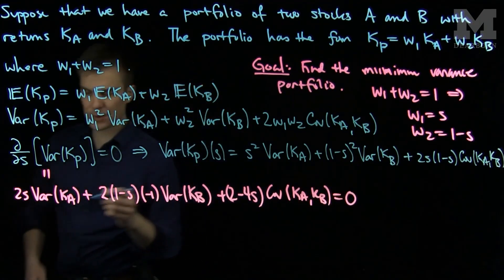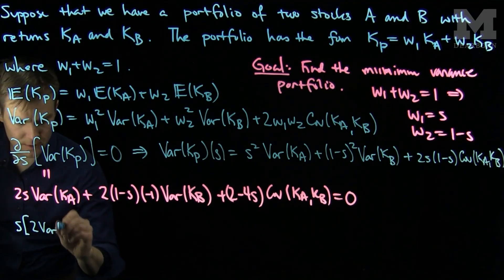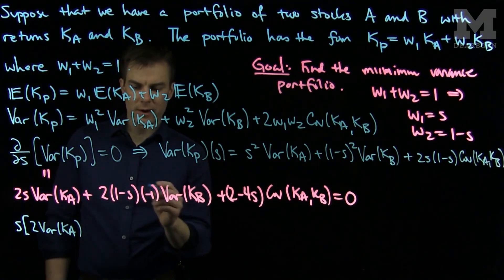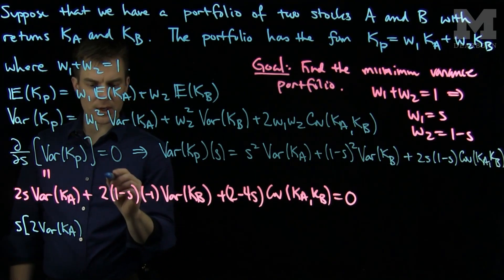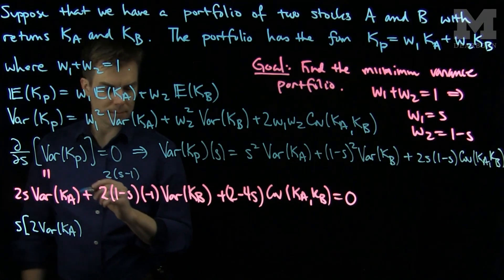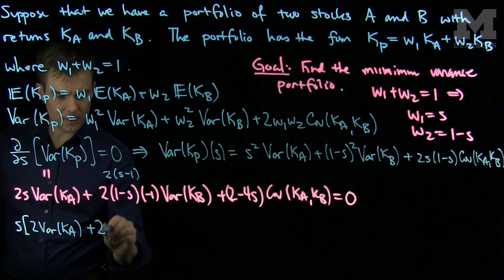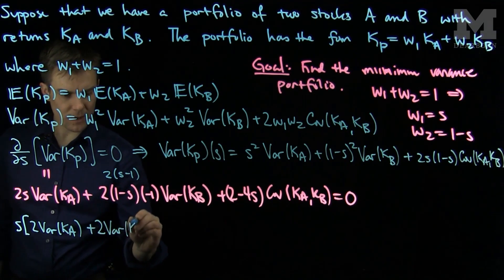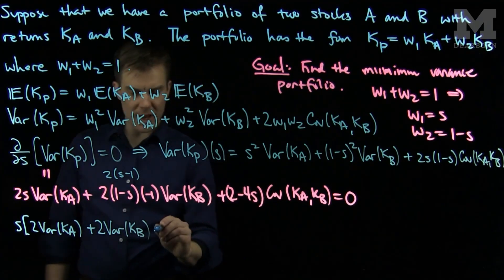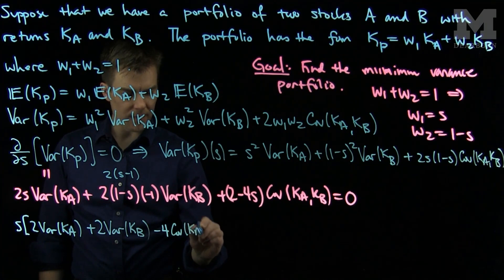And so now gathering the terms with S, we will say that I will have an S and then I will have twice the variance of Ka. The coefficient of S over here, if we simplify this, what we see is this expression over here is 2S minus 1. And so the coefficient of S over here will be twice the variance of Kb. The coefficient of S over here is negative 4, the covariance of Ka and Kb.